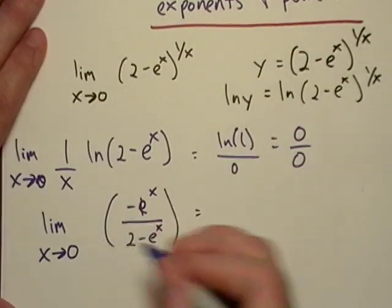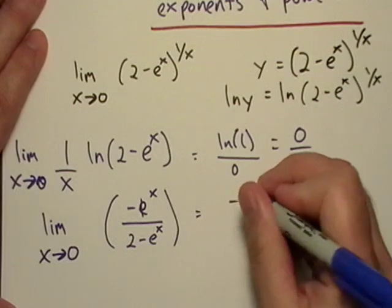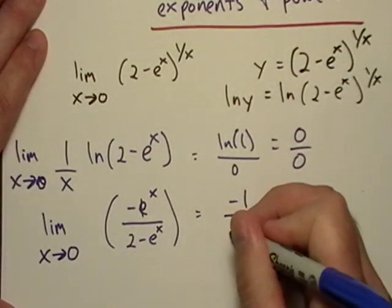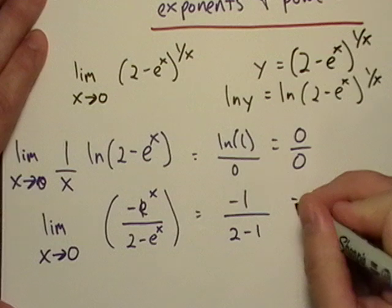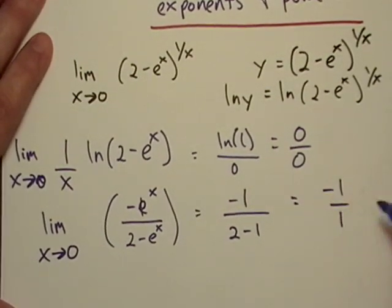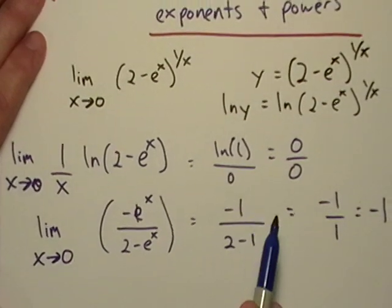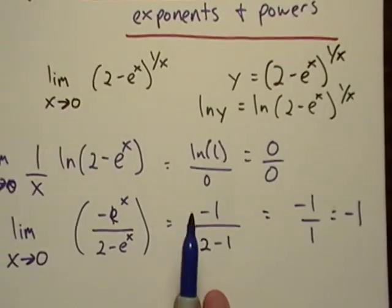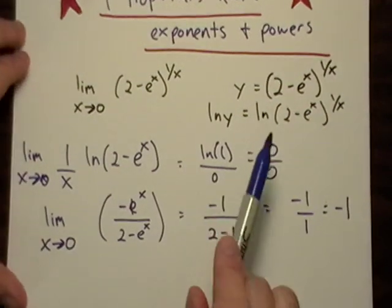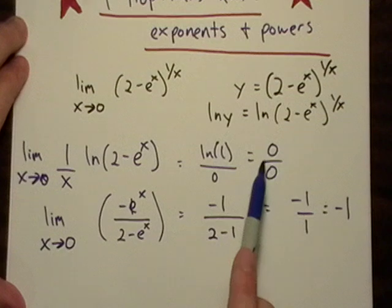And if I take the limit here, what do I get? I get e to the zero is negative one and then I get two minus one. And that right there, that is negative one over one, which is just negative one. So basically what I did, I transformed this. I'm kind of running off the paper, sorry. So I transformed this.